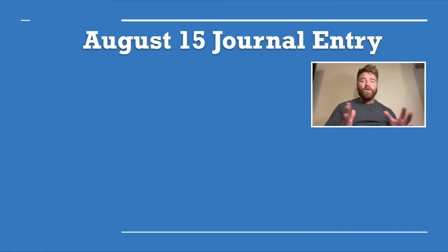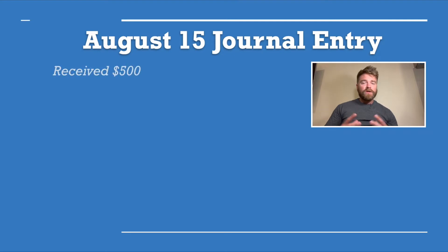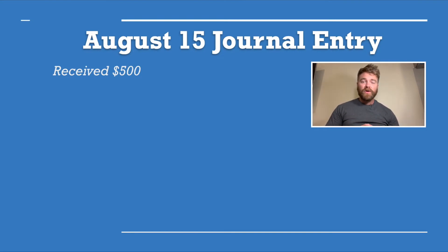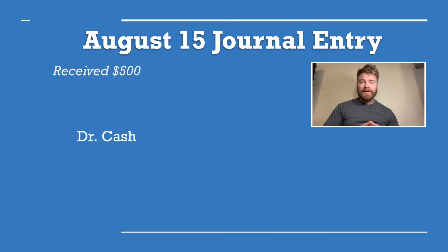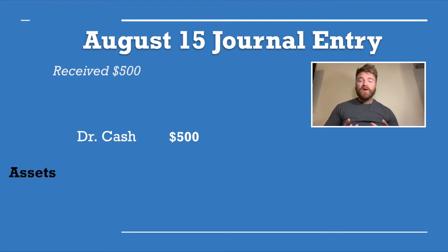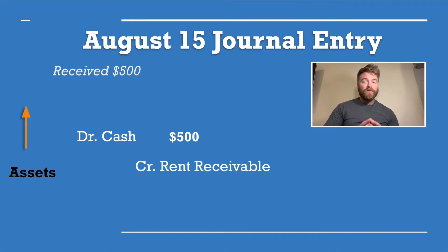Now let's fast forward to August 15th. Suddenly the renter was able to pay half of the rent that they owed. So what do we do? We have to adjust our books to show that half of the rent payment was received for $500. We record cash as an asset debited for $500, showing that our assets are increasing. But at the same time, we also record rent receivable as a credit for $500.